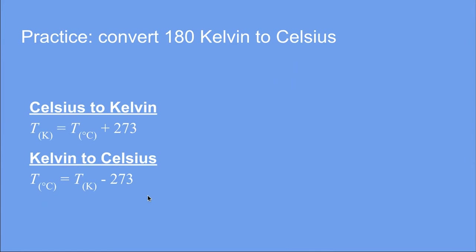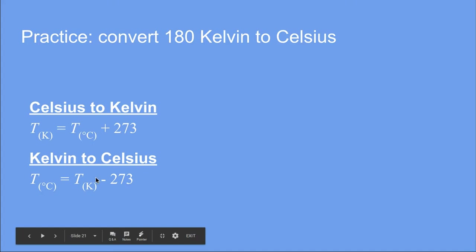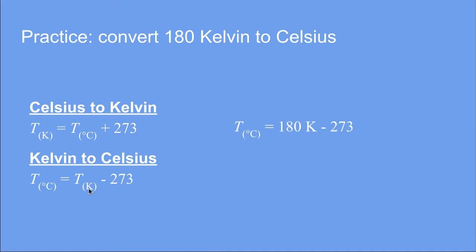Let's practice on that. Say we have 180 Kelvin and want to know what it is in Celsius. Using the Kelvin to Celsius formula, all we do is subtract 273, and we get negative 93 degrees Celsius. Yes, temperatures in Celsius can be negative. When it comes to Kelvin, we cannot go past zero — a negative Kelvin temperature is physically impossible, so you can use that as a check to know if you've done the problem correctly.